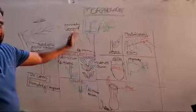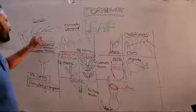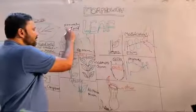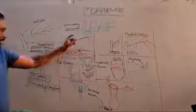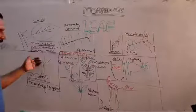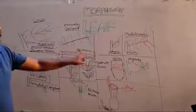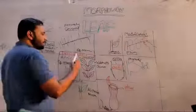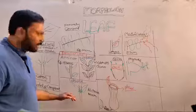Leaves are mainly two types: simple leaves and compound leaves. A simple leaf has a single lamina — example hibiscus. In compound leaves, leaflets are present. These are two types: pinnately compound and palmately compound. In pinnately compound, leaflets are present on either side of the rachis. In palmately compound, rachis is absent and leaflets are present on the tip of the petiole — example silk cotton.